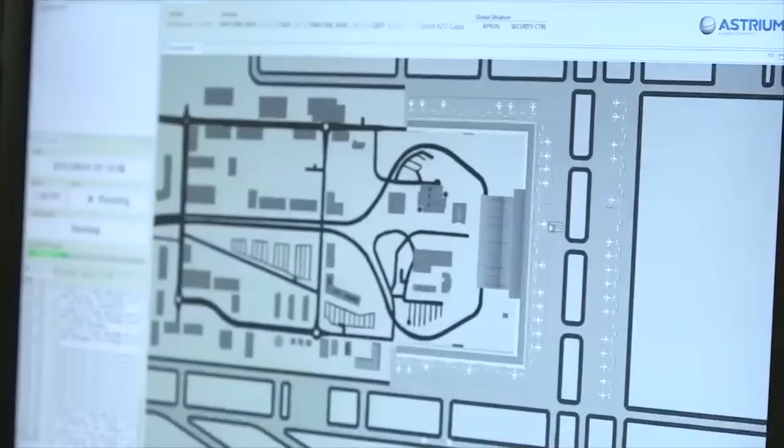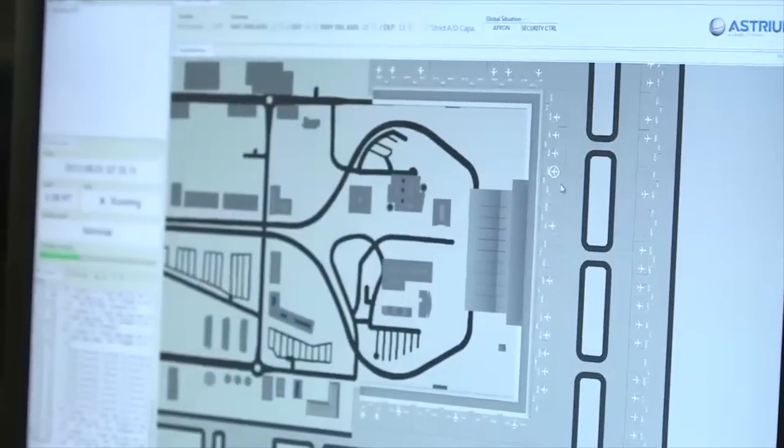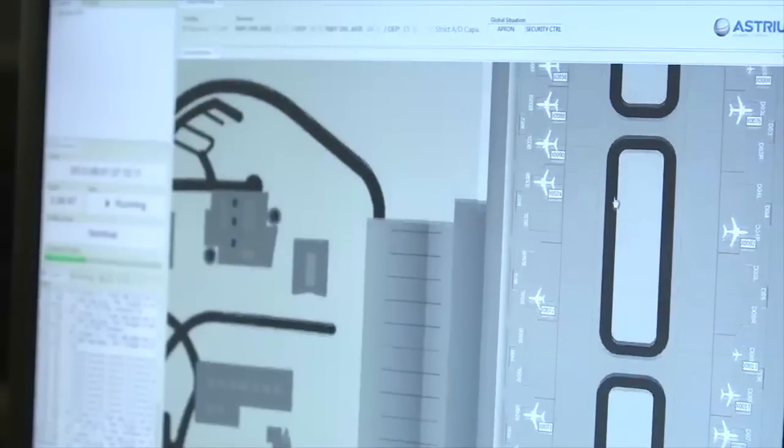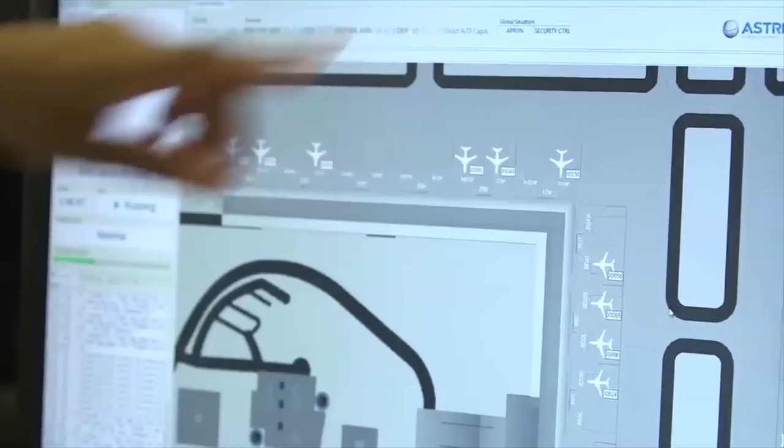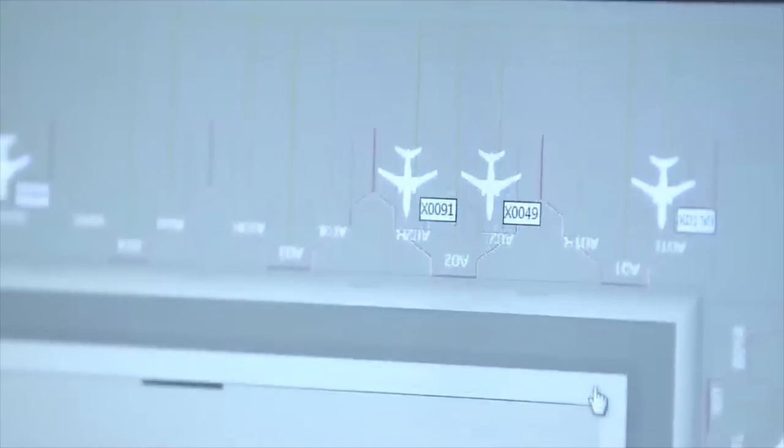To indicate to the user that an event that they may not be aware of is taking place, so there's a constraint in a terminal, for example, which could be impacting their flights so they can then go and investigate, see what is happening and take necessary actions to optimize their flights.